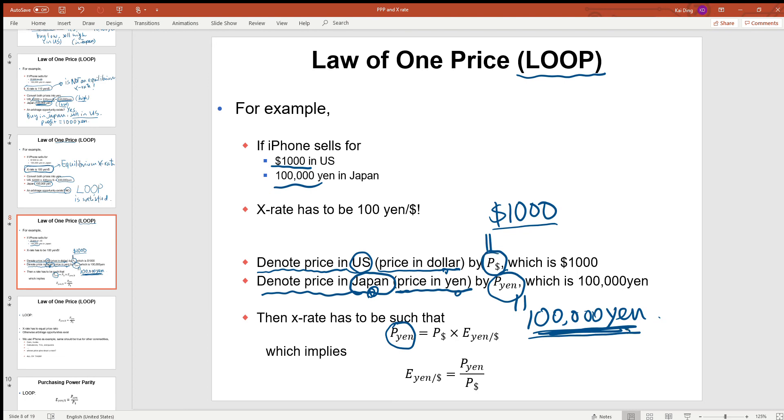In the US, price is PUS. To convert it into yen, we multiply this price by the exchange rate. So multiply the price in US by the exchange rate. That's the iPhone price in the US converted into Japanese yen. So this is the iPhone price in Japan. This is the iPhone price in the US converted into the units of Japanese yen.